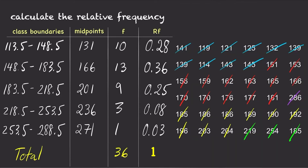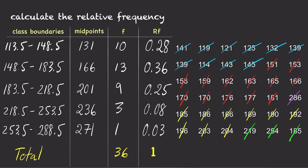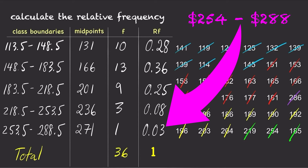From the relative frequency distribution table, we can see that 25% of the people in their late twenties paid between $184 and $219 for their health insurance premiums in 2014. Likewise, 3% of the people paid between $254 and $289.